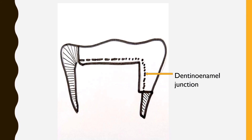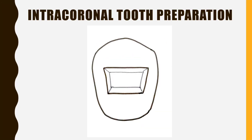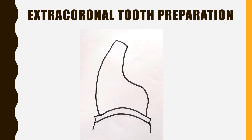This box-like tooth preparation is an intra-coronal tooth preparation, with both internal and external preparation walls. The extra-coronal preparation looks like a stump where all of the enamel is removed; this tooth preparation is made to receive a crown.